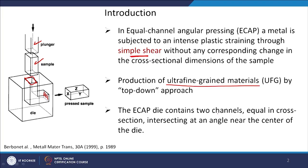In ultra-fine grain production there are two approaches: bottom-up and top-down. This is a top-down approach where you have coarse grain material in bulk and then you are deforming it and refining the microstructure — going from coarse to fine. The ECAP die contains two channels equal in cross-section intersecting at an angle near the centre of the die. It is a very simple approach to the deformation process.